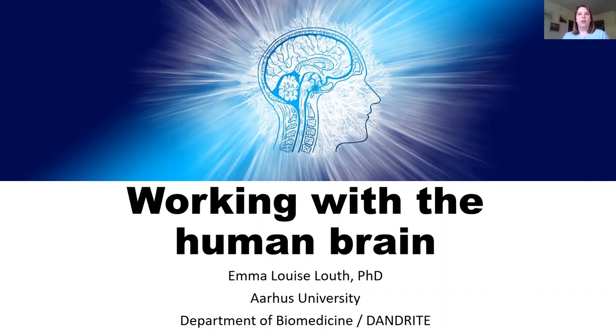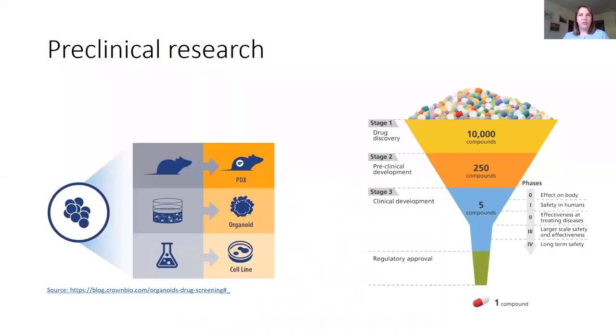In our laboratory, we are working on basic neuroscience research directly with human brain tissue samples. Researchers in biomedicine are constantly working to improve current treatments for disease and find new drug targets. However, most of this preclinical research is conducted in petri dishes or in rodent models. Is this the most effective way to test for new drug targets?